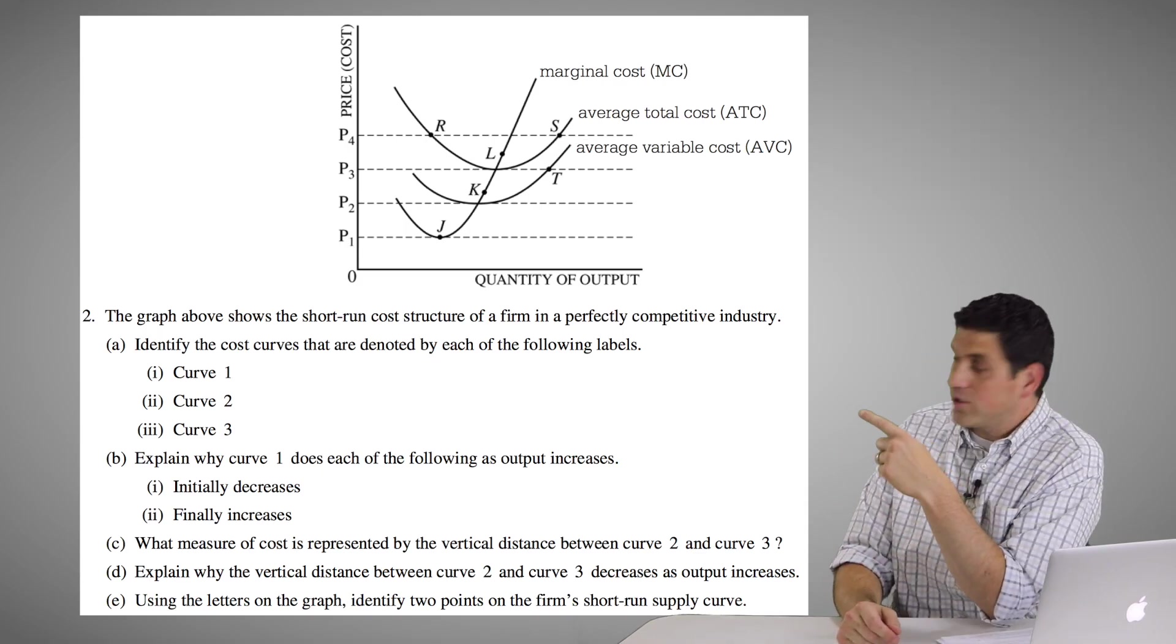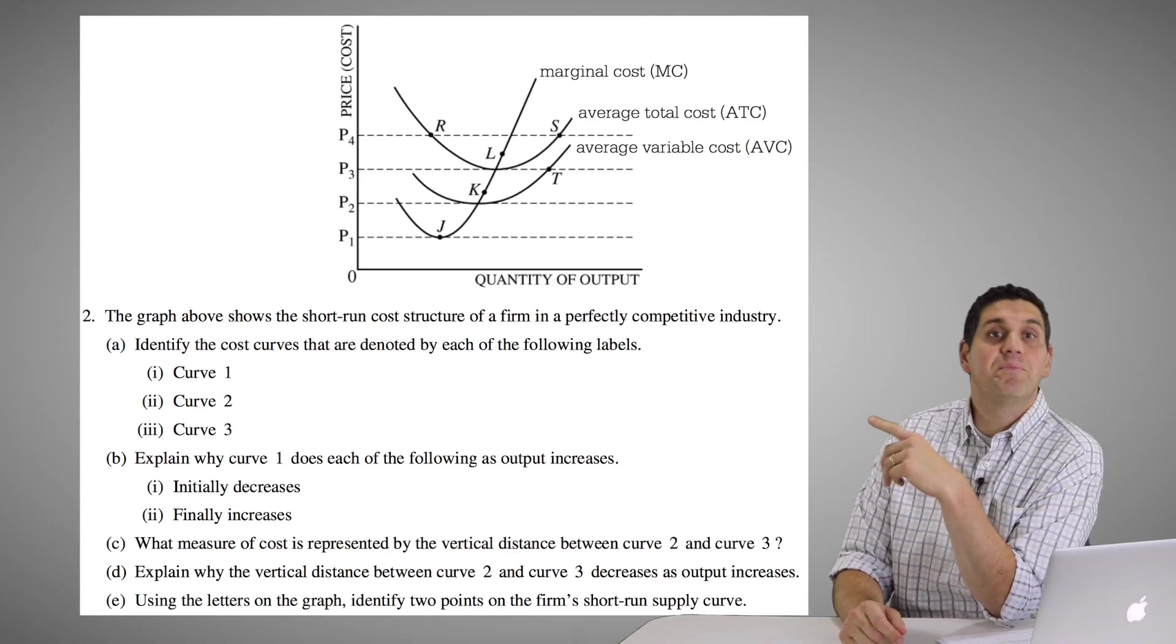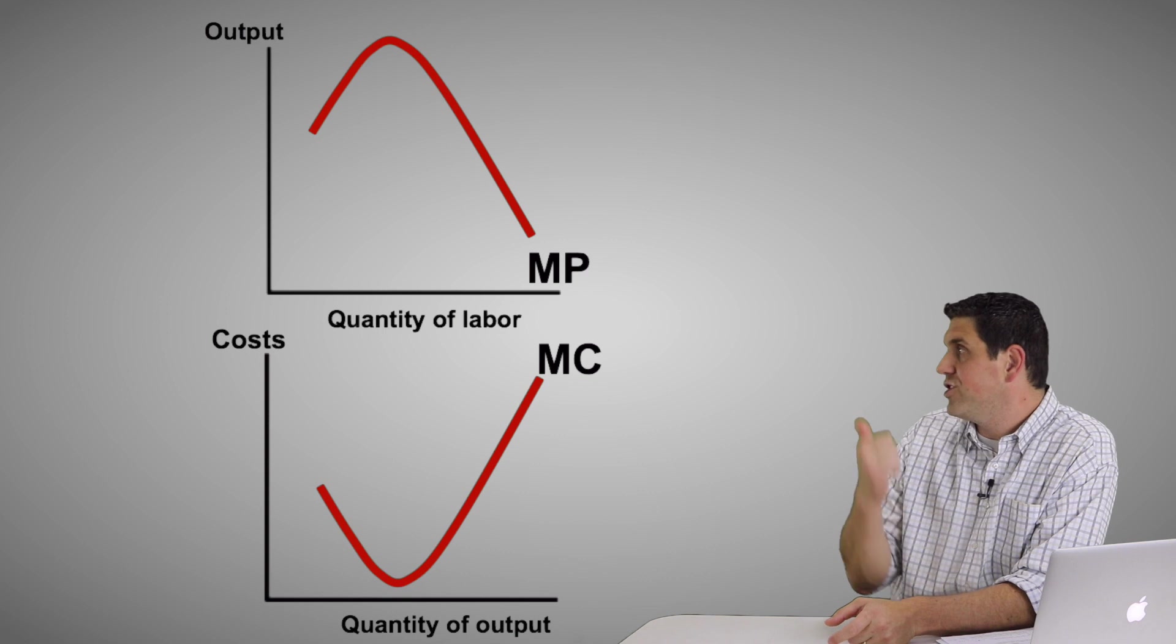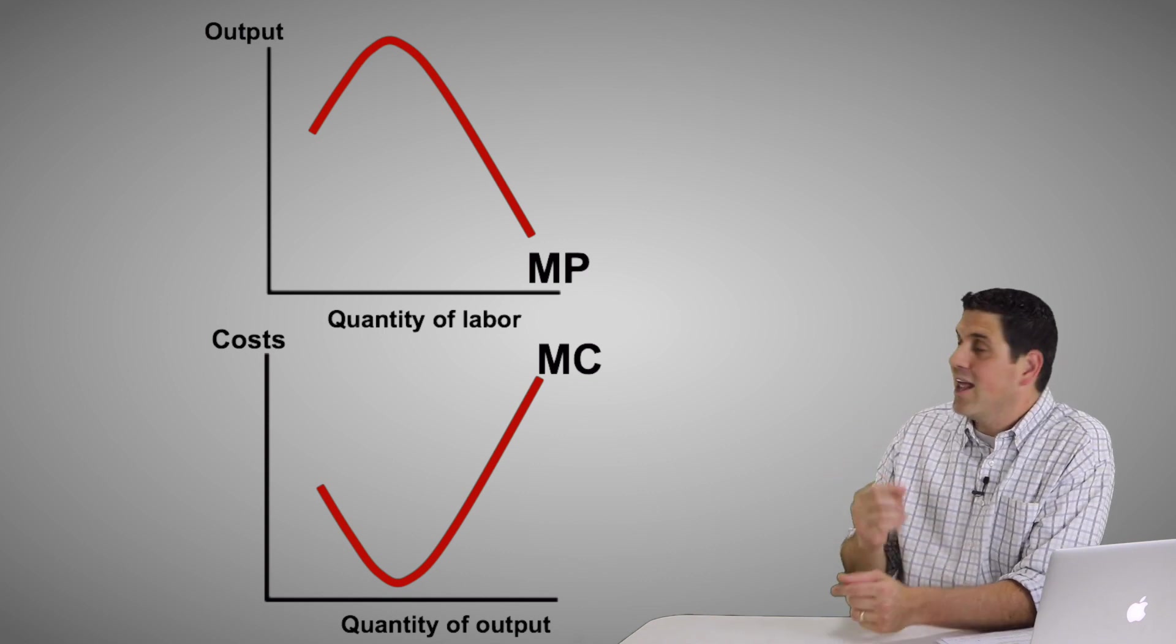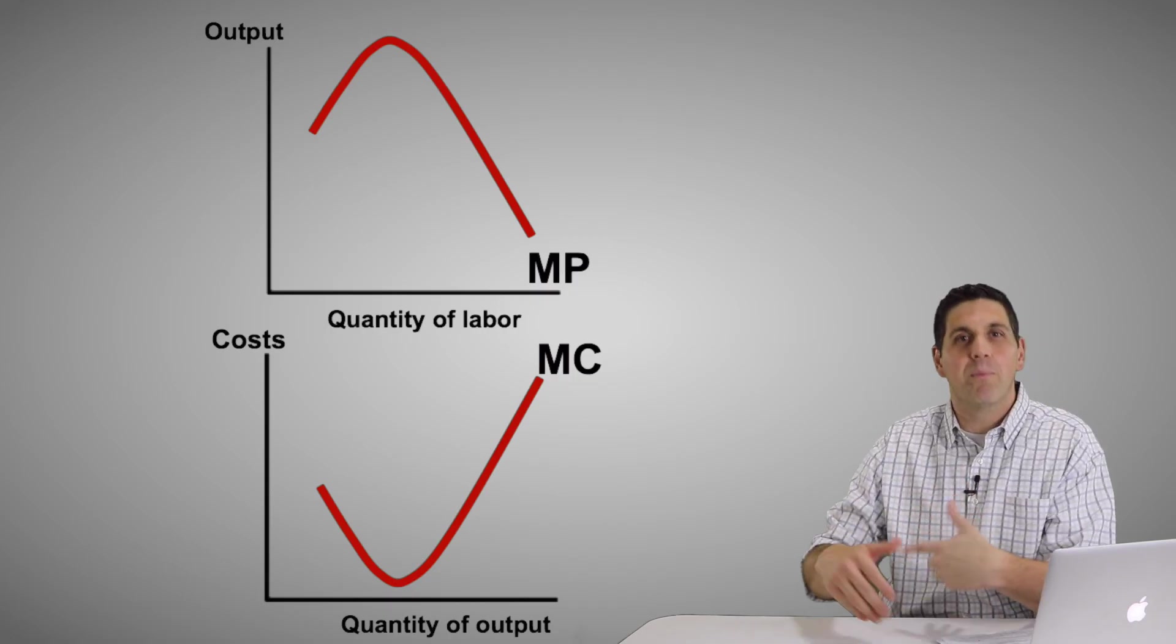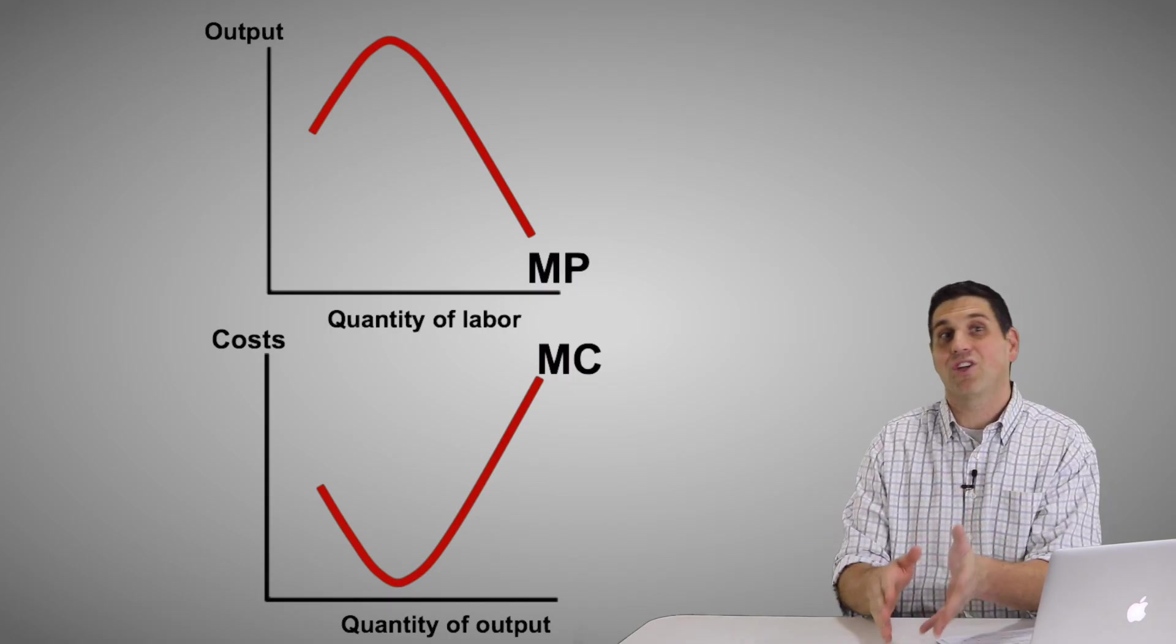The reason why the marginal cost curve always goes down and then goes back up is because it's a mirror image of the marginal product curve. Remember, the marginal product curve shows the relationship between inputs and outputs. And as you hire more and more workers, the additional output starts going up. Each worker can produce more than the previous worker because of specialization.